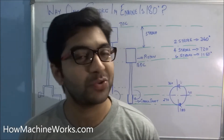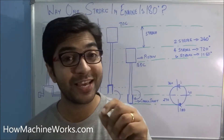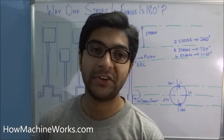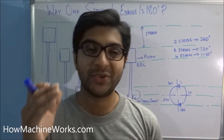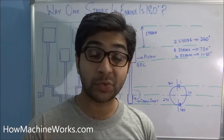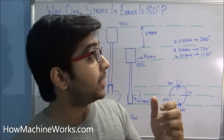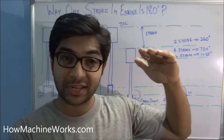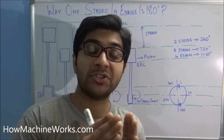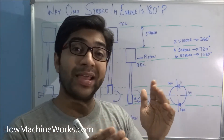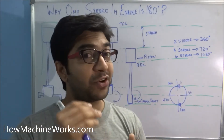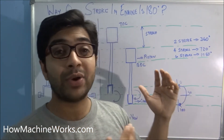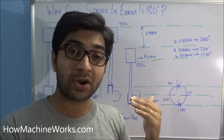Hi guys, welcome back to howmissionworks.com. Today we will be discussing why one stroke of an engine is 180 degrees. In your diploma or engineering classes, when you learn about engines, you may have learned about two-stroke engines and four-stroke engines, the stroke length, and the degree of rotation — how much rotation makes a two-stroke or four-stroke engine.